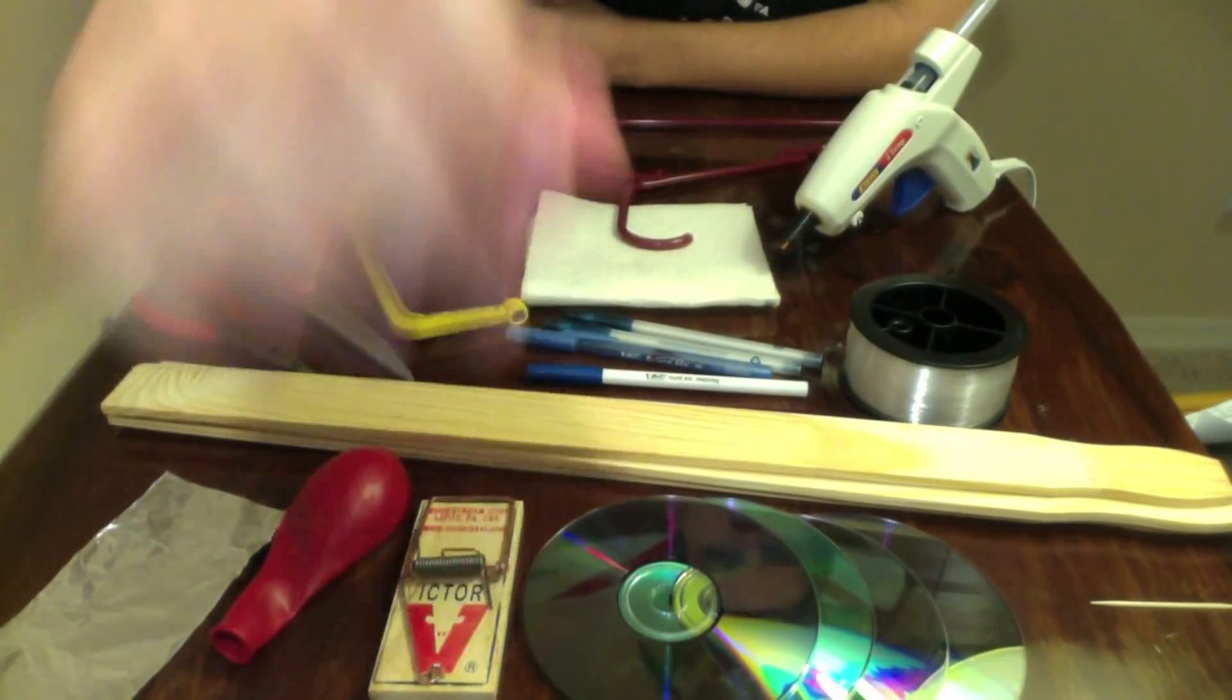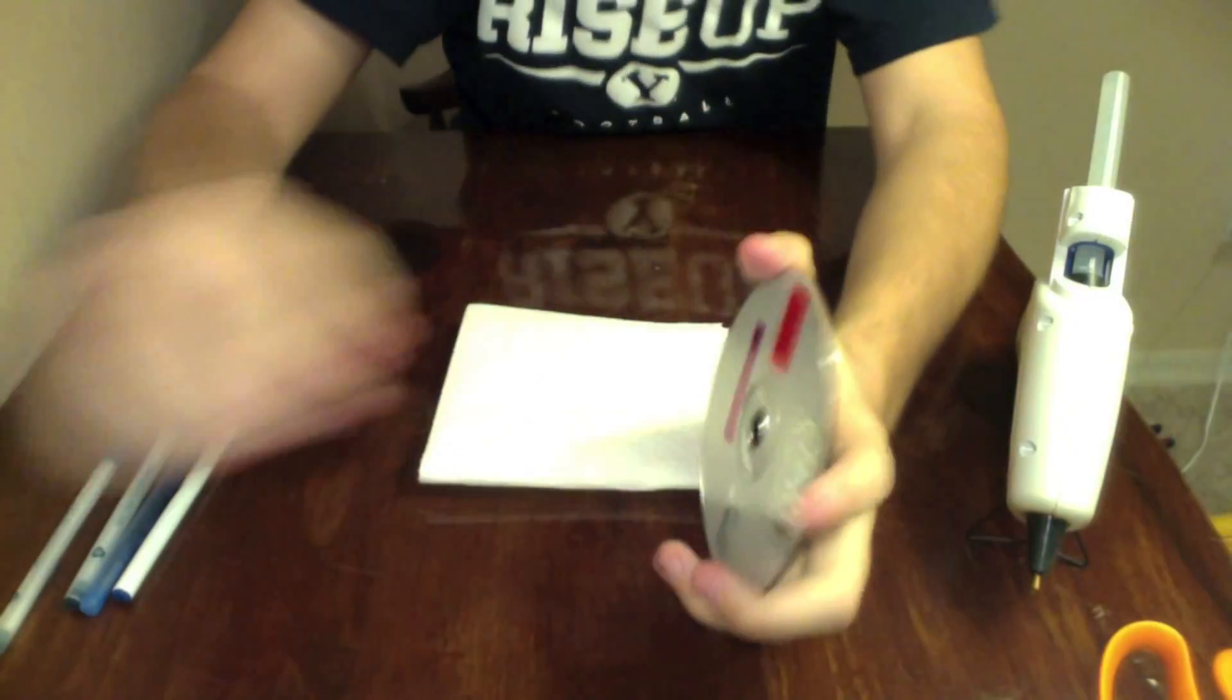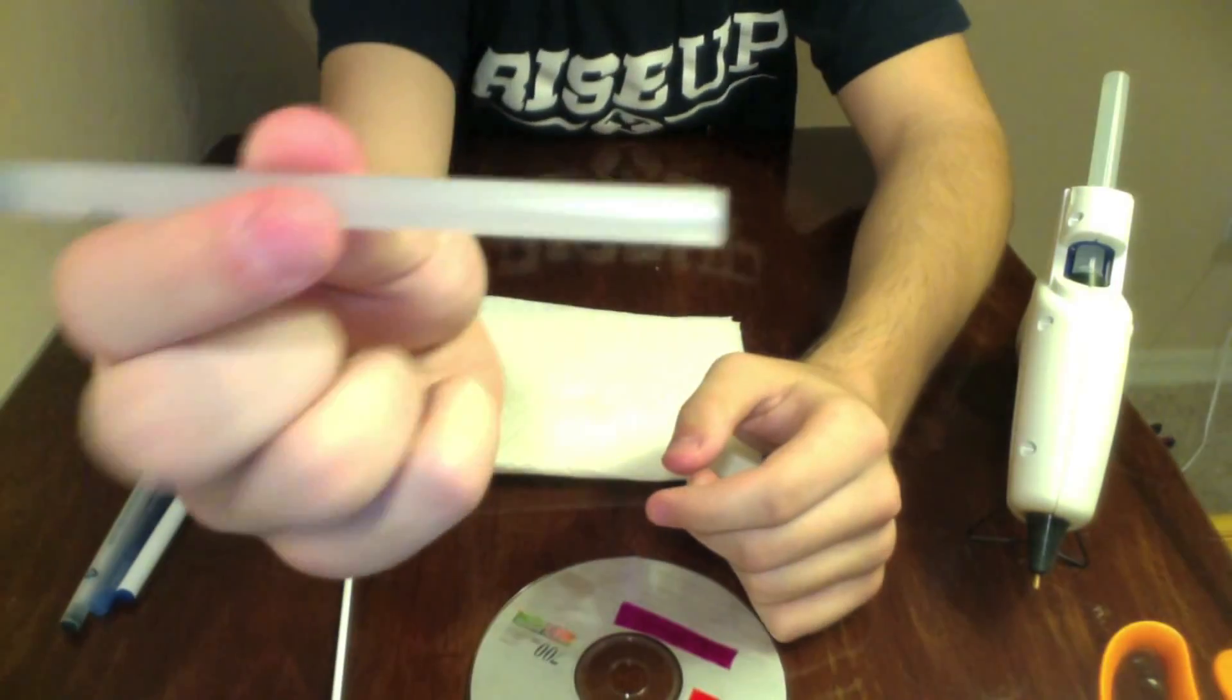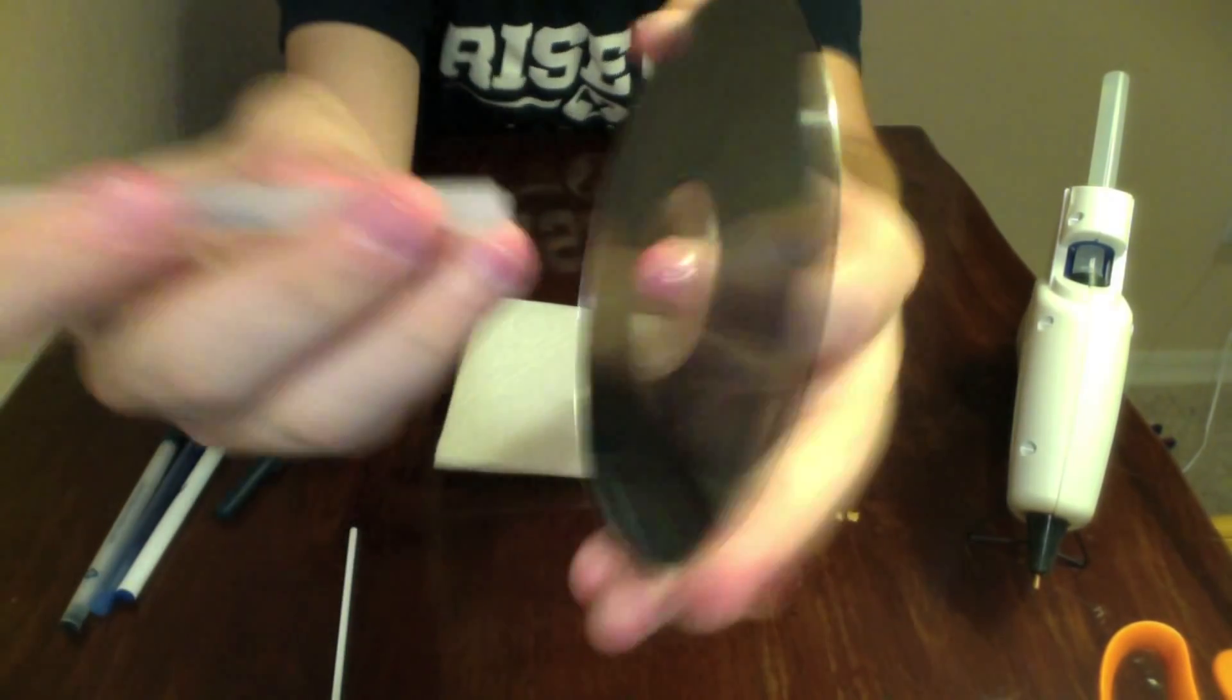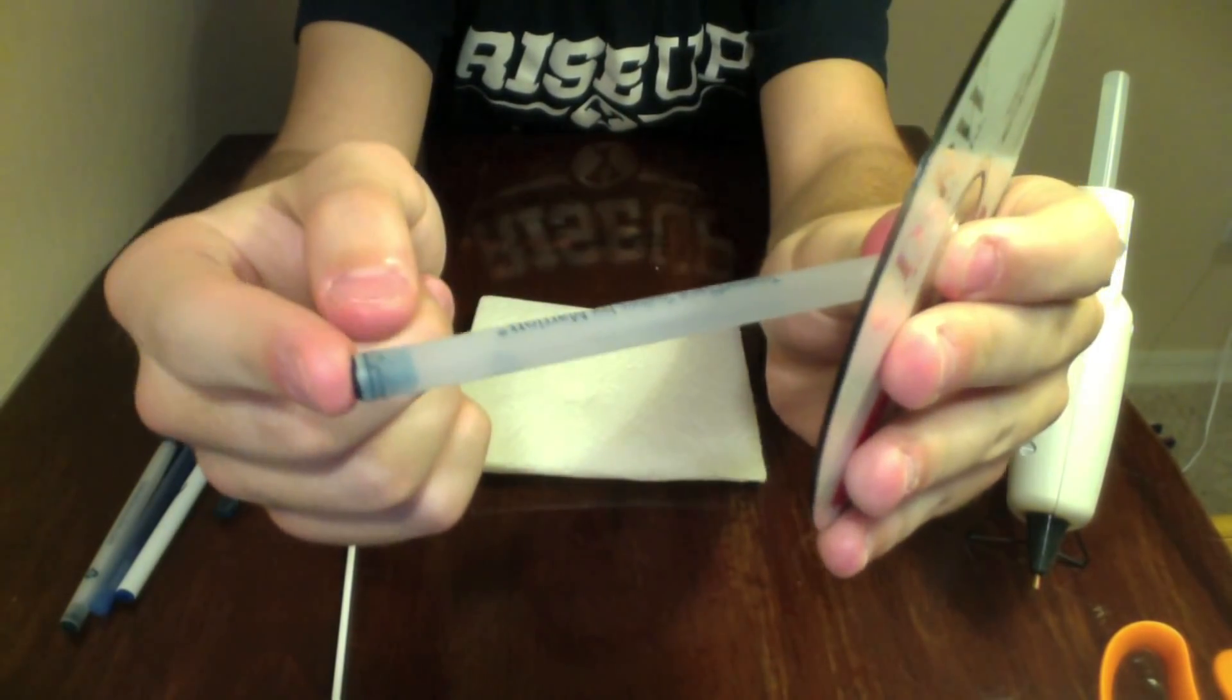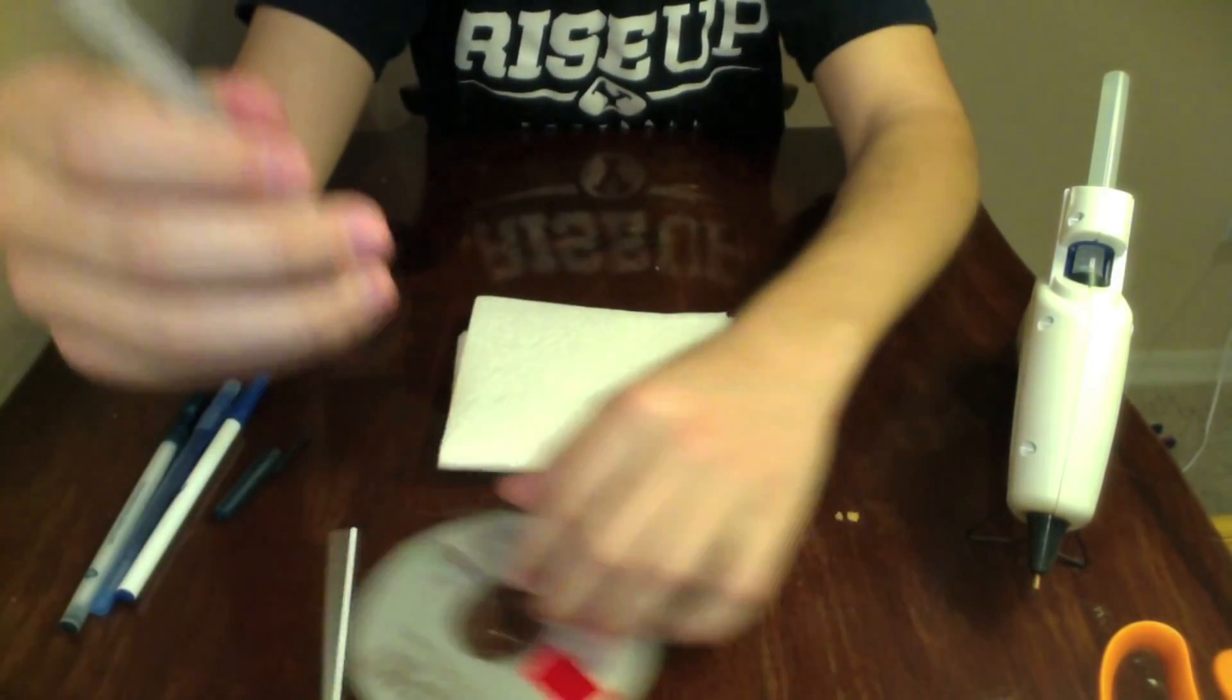So here you go. The problem with most mousetrap cars is you'll get a CD and you won't have a good way to put an axle on it. Basically the way this axle works is this hollow pen casing is the axle. When you set the pen in like this, you put another CD on this end. So it's really simple to just glue your CD on, flip it over, and glue your other CD on.